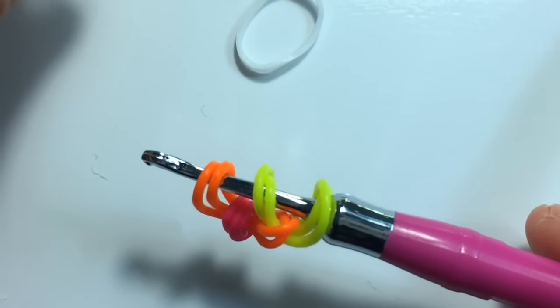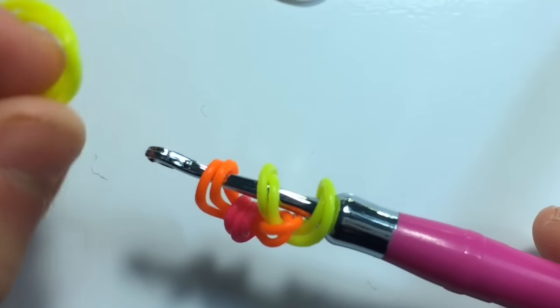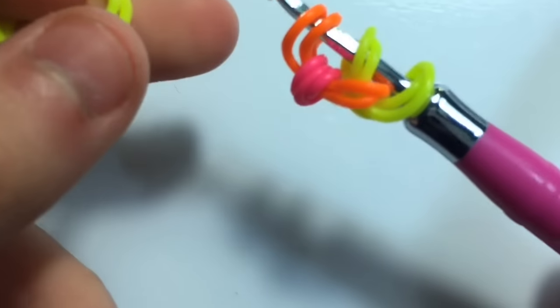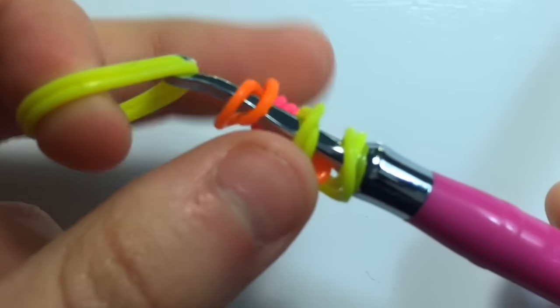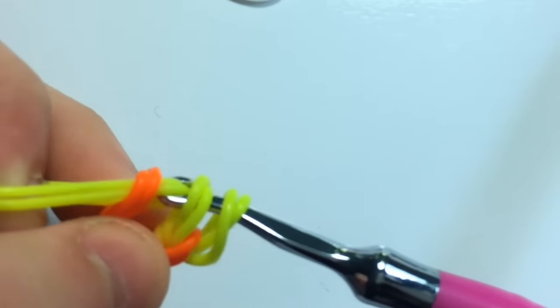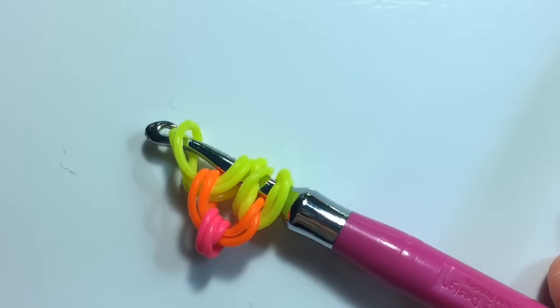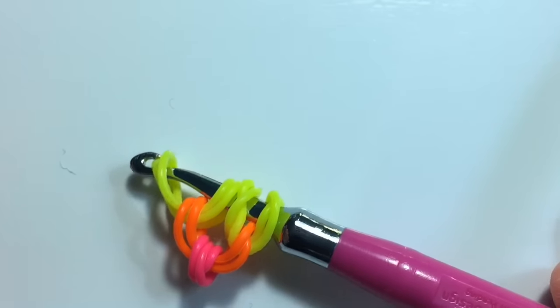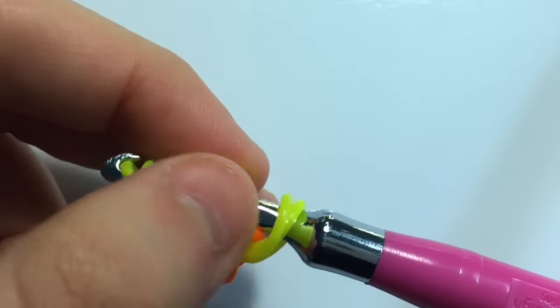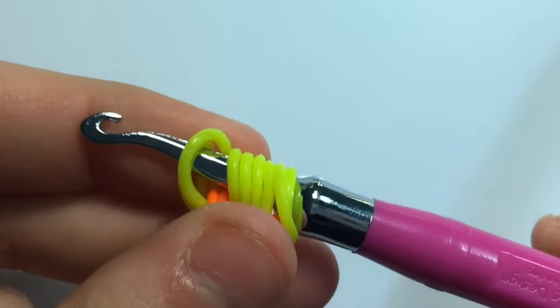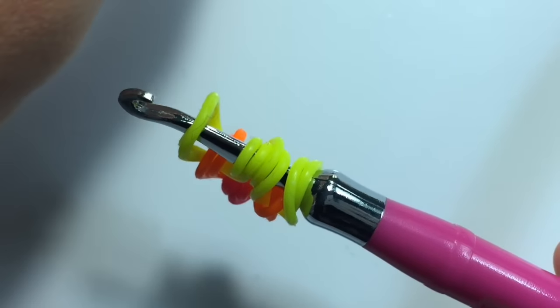You're going to do the same thing. So I'm taking two yellow bands and pulling them through only the orange. It's okay if your bands are twisted at this point. And now this part is kind of difficult.